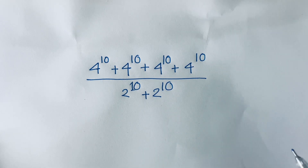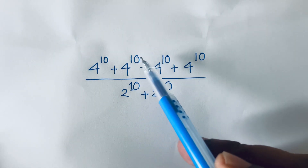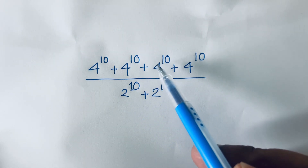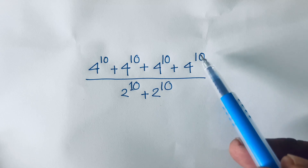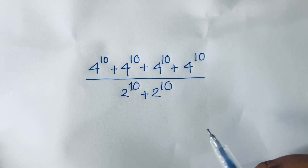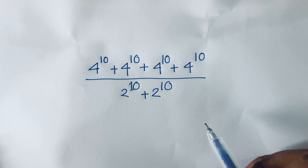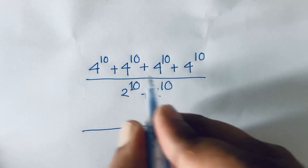Hello everyone. In this video I solve this Russian Math Olympiad question: 4 to the power 10 plus 4 to the power 10 plus 4 to the power 10 plus 4 to the power 10, over 2 to the power 10 plus 2 to the power 10. How to solve this question?